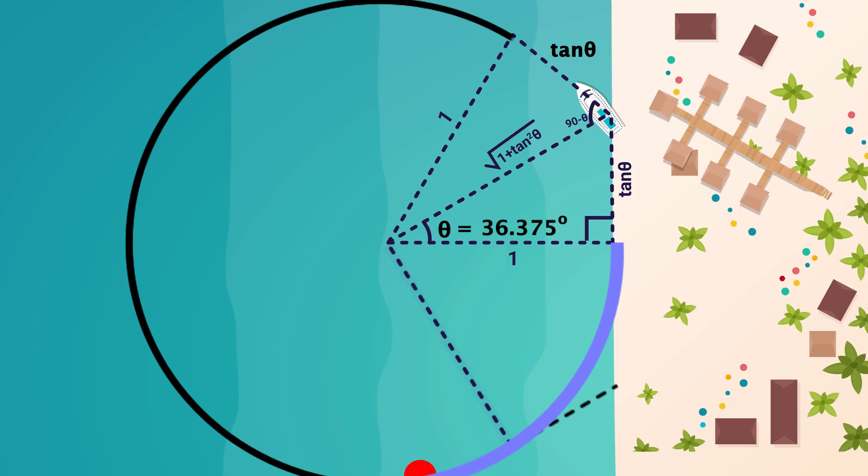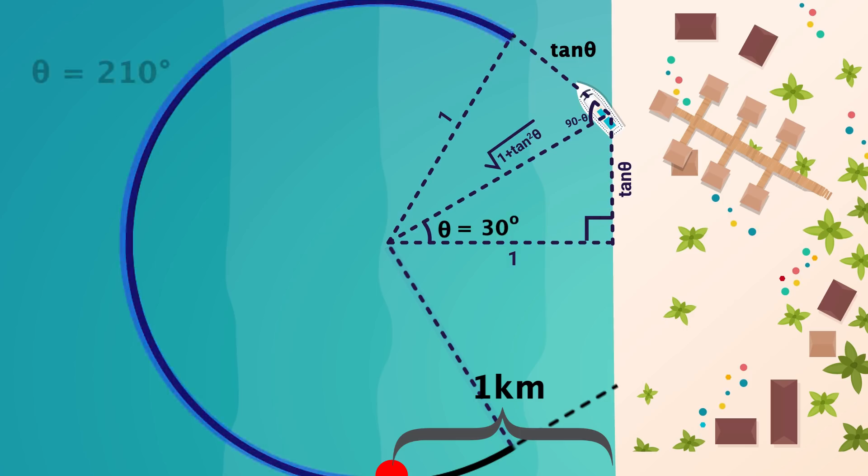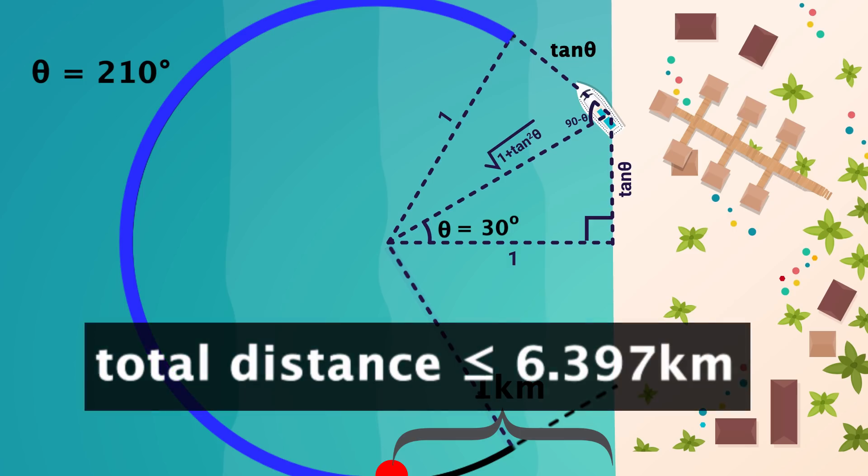The worst case would be you're here, meaning you have a kilometer to go, which is why I showed that path. The new theta that optimizes this is 30 degrees, meaning the arc would be 210 degrees, and putting all the lengths together, you'd drive no more than 6.397 kilometers, saves you just a little bit over the previous method.